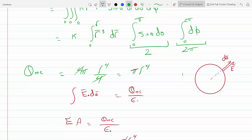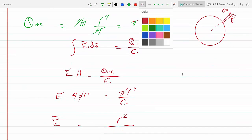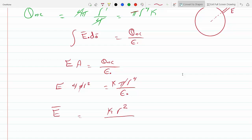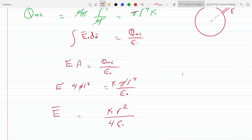Oh and there's a K here. We forgot the K. There was a K here which puts a K here, so this is K r² over 4 epsilon, and this is definitely in the radial direction.